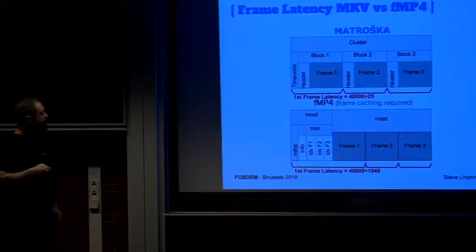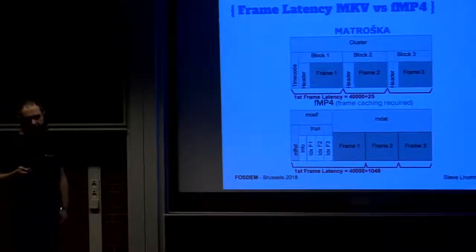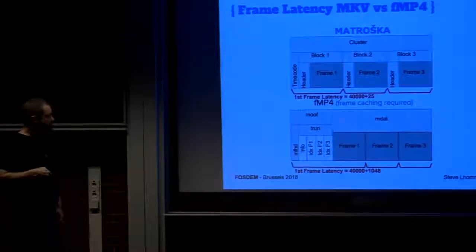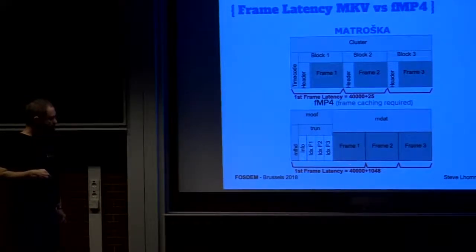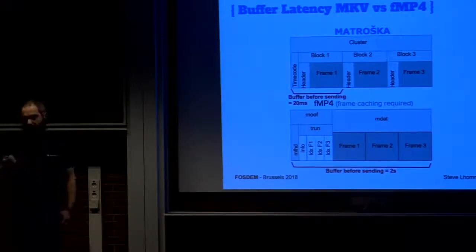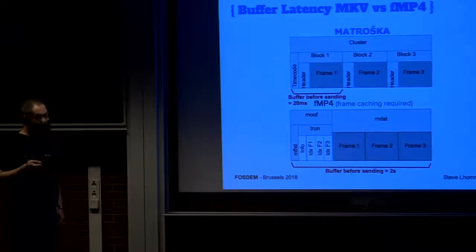What I call 'frame latency' is how much data you need to receive before you can send the first frame to your decoder. For a 40 KB frame in Matroska, you need 40,025 bytes before you can send it to the decoder. In fragmented MP4, you need the 1 KB atom header plus the 40,000 bytes of frame data. Again, latency is lower in Matroska. And the lower the bitrate, the bigger the difference.